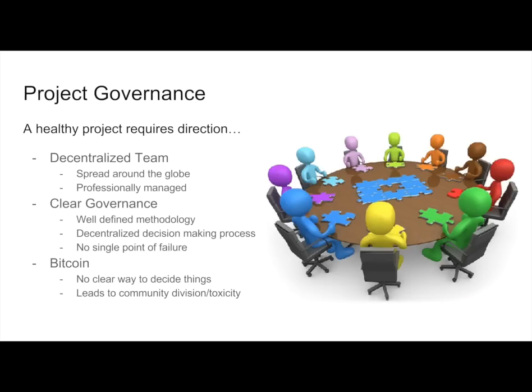Governance is also a topic that is rarely discussed within peer-to-peer networks, because no peer-to-peer network has ever grown to the size where it has to deal with questions like: which direction are we going in, should we take the opinions of the community seriously, or how are decisions made if the community is split? For something to be successful, like a centralized corporation, you need a clear governance methodology. We've implemented this in a brand new way never seen before in any type of software — it decentralizes our decision-making process among thousands of people. In Bitcoin, there has never been a clear way to decide anything for the project, and this has led to all sorts of problems within their ecosystem.